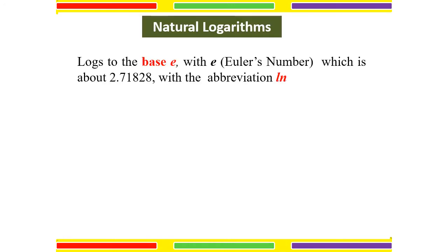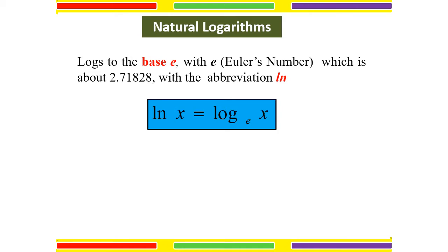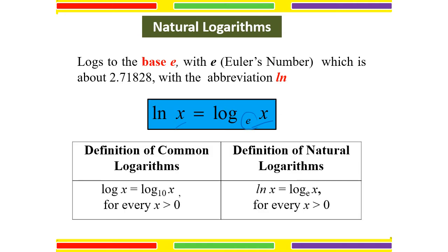Natural logarithm: what is it? Natural logarithm is log to the base of E, where E is Euler's number, approximately 2.71828, with the abbreviation LN. Some call it 'lon' but it's natural logarithm. Natural logarithm of X equals log to the base E of X. For common logarithm, we have 10 as the base — your calculator uses base 10 directly. If you want to find the natural logarithm, use the LN function on the calculator.